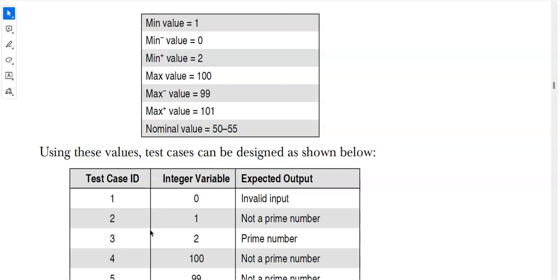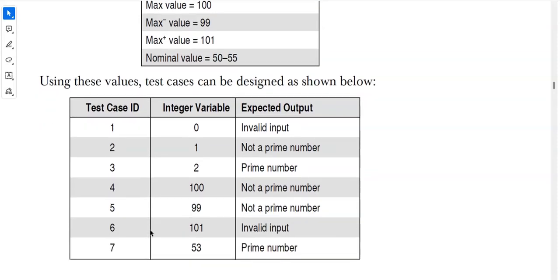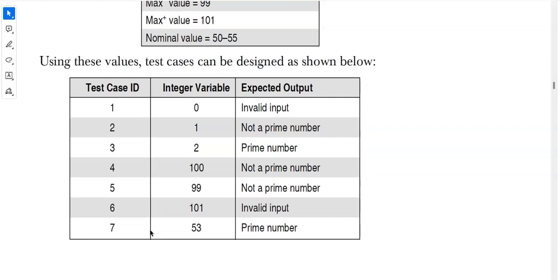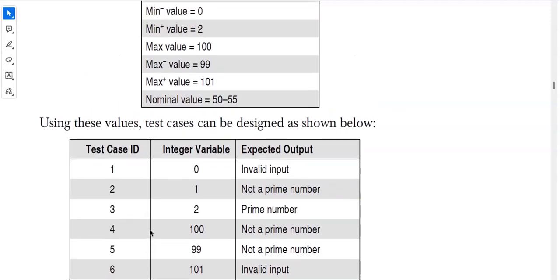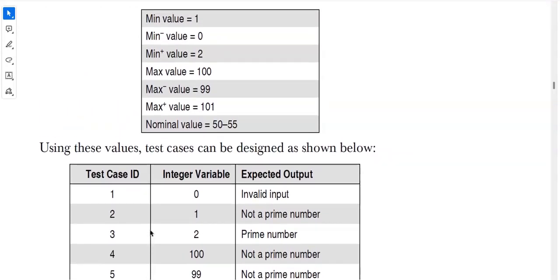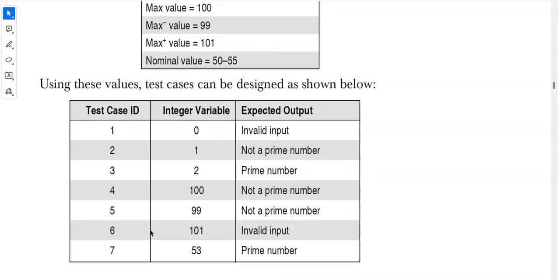Writing the test case table sequentially with values 0, 1, 2, 100, 99, 101, and 53: Values 0 and 101 are invalid inputs because the range is 1 to 100. Even though 101 can be considered prime, it is not in our range, so we write 'invalid input'. Then: 1 — not a prime number; 2 — prime number; 100 — not a prime number; 99 — not a prime number; 53 — prime number.